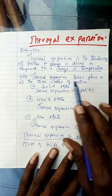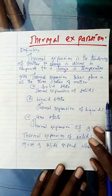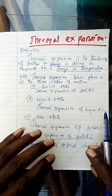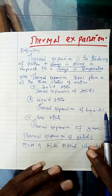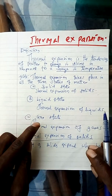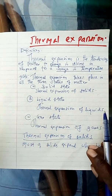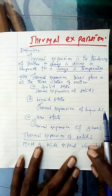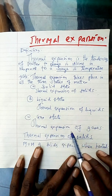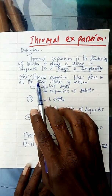Thermal expansion takes place in all three states of matter. We have the solid state, the liquid state, and the gaseous state. So expansion is applied in all three states of matter — it is applied in solid state, liquid state, and gaseous state. Whenever you are talking about thermal expansion you have to consider solid, liquid, and gaseous. That is why we have thermal expansion of solids, thermal expansion of liquids, and thermal expansion of gases.